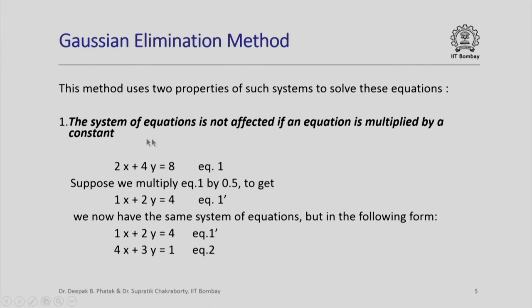The first: any system of equations is not affected if an equation is multiplied by a constant. What it means is, if I have 2x plus 4y equal to 8 as an equation, and if I multiply it by any value say 0.5 to get 1x plus 2y equal to 4 as equation 1 prime, both these equations actually mean the same thing. And therefore, the total system of two equations does not change at all. Observe that 0.5 is not an arbitrary number, we have chosen it such that the coefficient of x now becomes 1. We shall comment on it as we proceed.